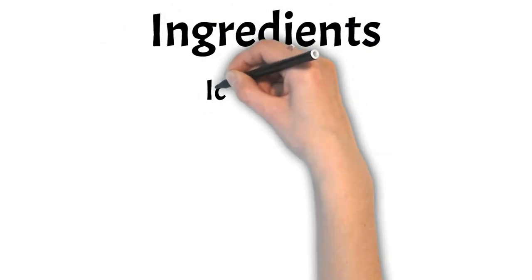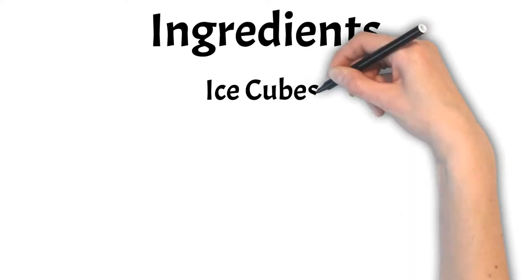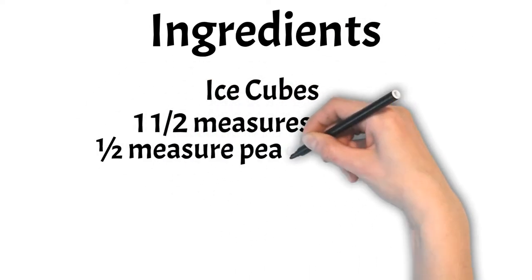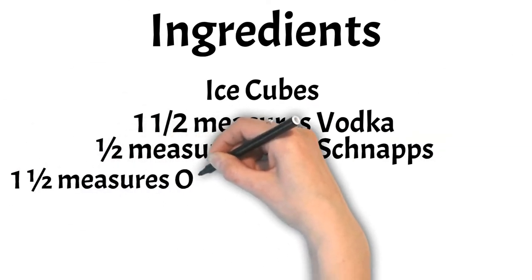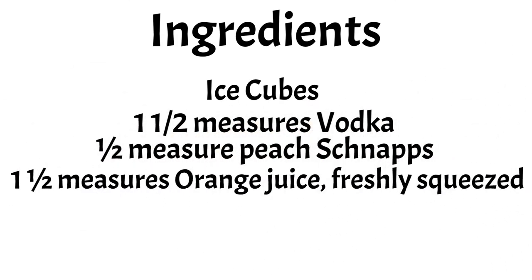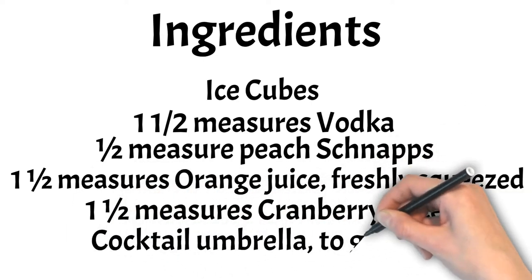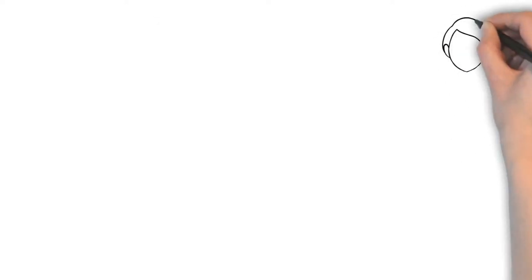Ingredients: ice cubes, one and a half measures vodka, half a measure peach schnapps, one and a half measures freshly squeezed orange juice, one and a half measures cranberry juice, and a cocktail umbrella to garnish.